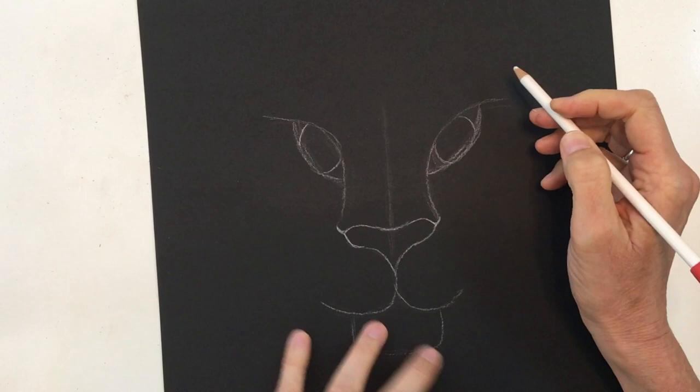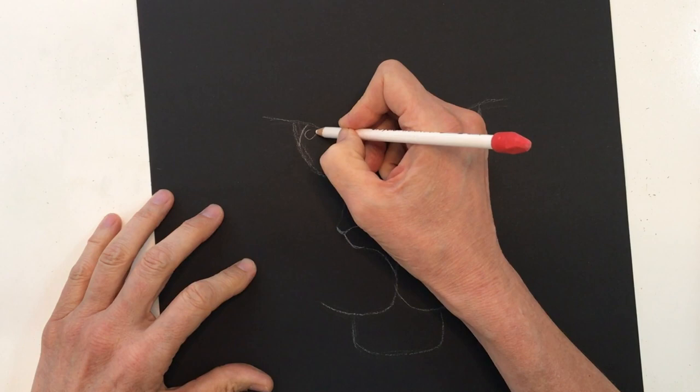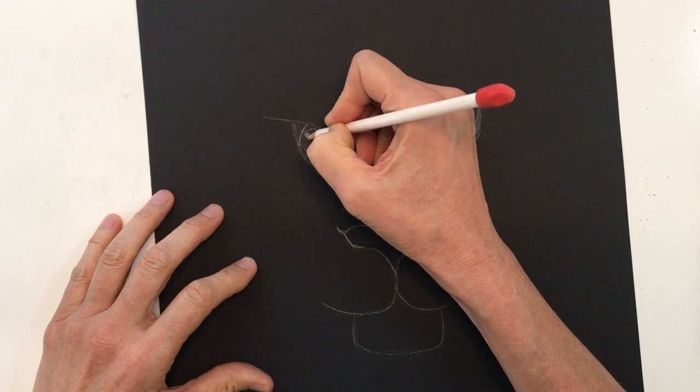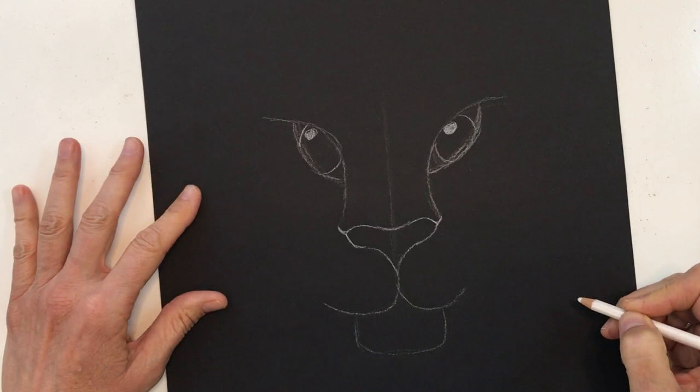Lion's eyes catch little glints of light, so we want to put in a highlight. Draw a small circle in each eye as a space holder — those are going to be filled in with white chalk later on.